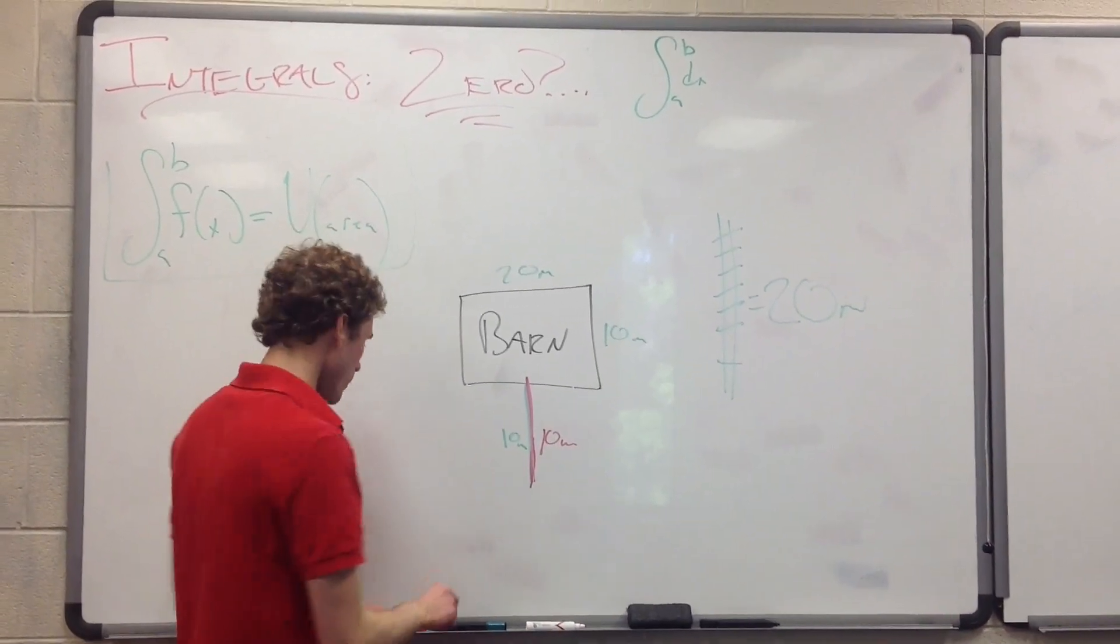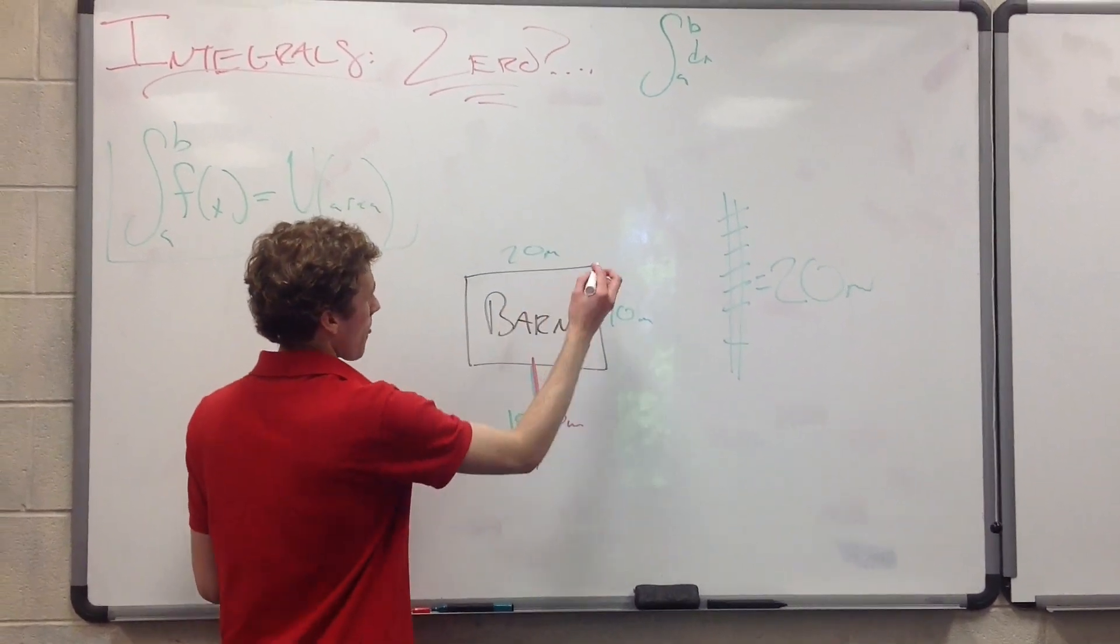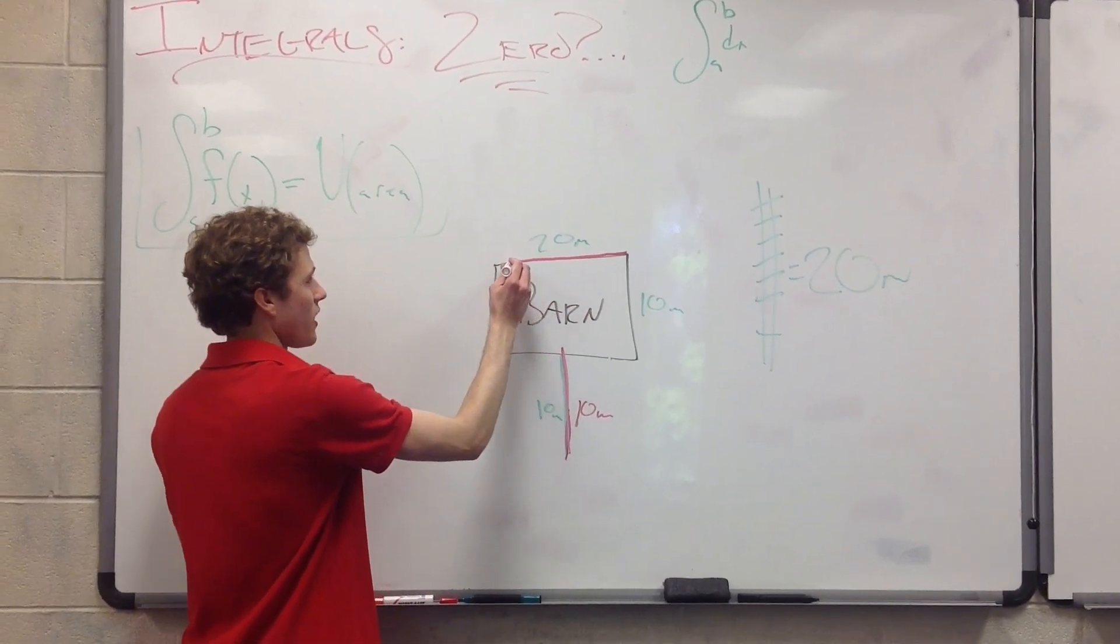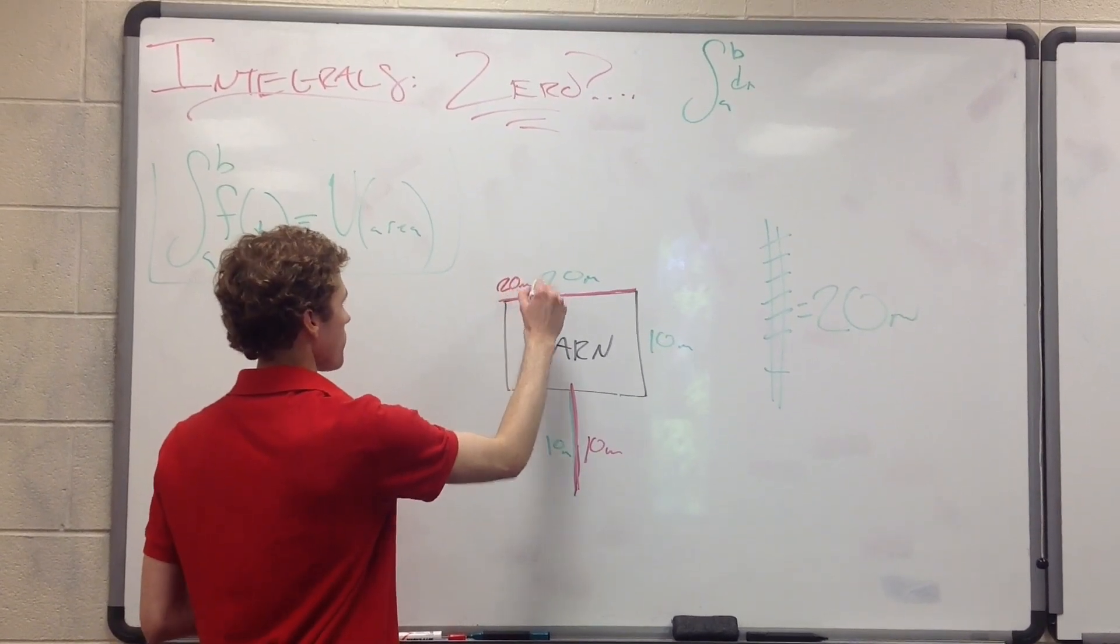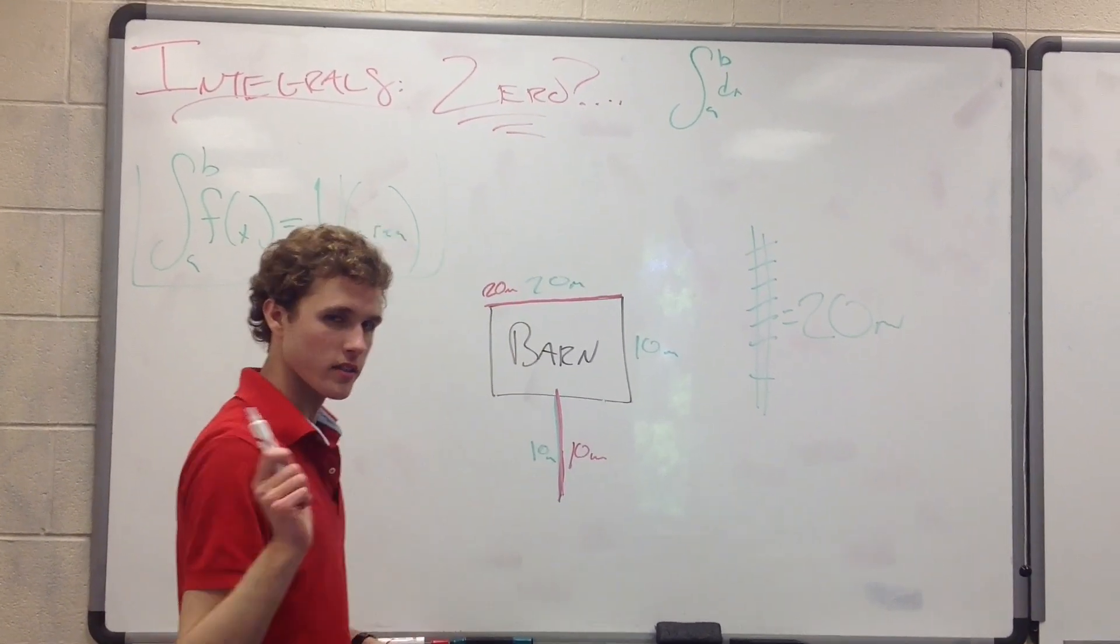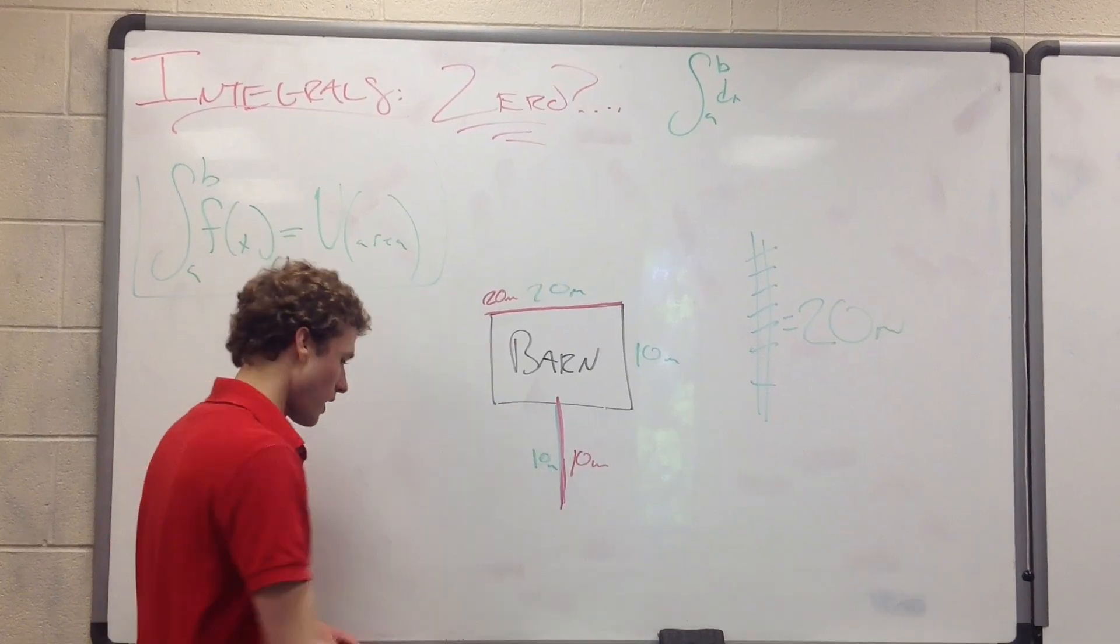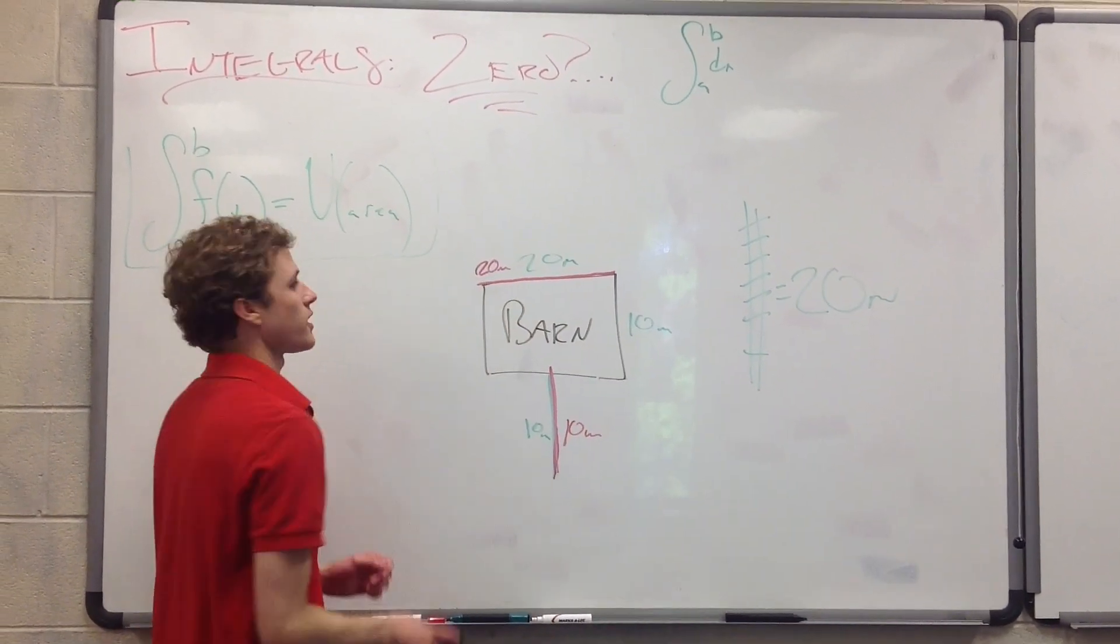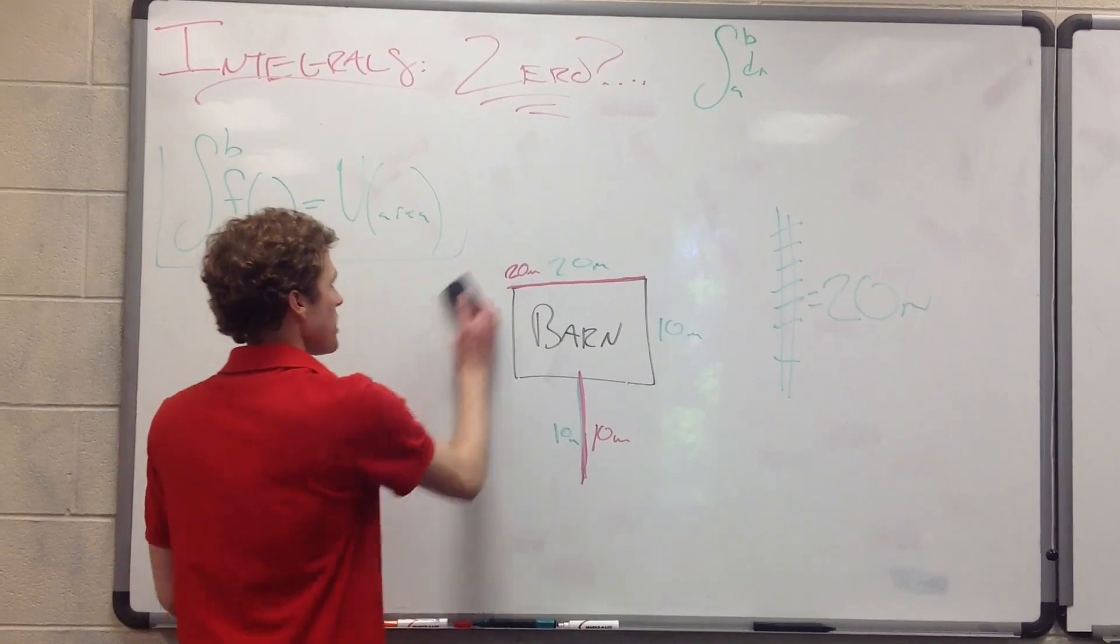Let's see. What else could we do? Well, what if we do this? What if we say 20 meters of fence? Let's just make the fence exactly on the outside of the barn. This is also 20 meters. Well, there's no area there either. So, let's translate these ideas onto the graph for our first two conditions in which the definite integral is going to be equal to zero.